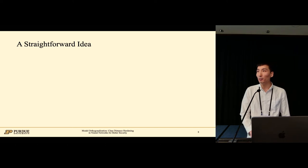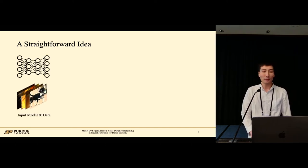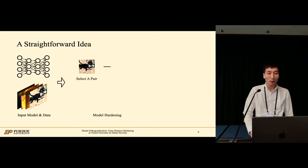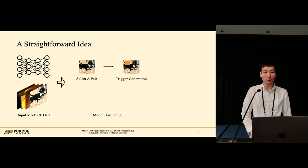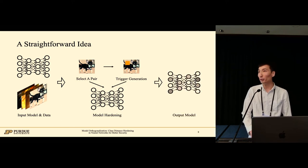A straightforward idea of model hardening is as follows. Given a model and its training data, we randomly select a pair and generate a trigger. The normal sample and the sample with injected trigger are used to train the model. It finally outputs a hardened model. This idea, however, has a few problems.